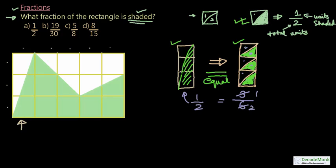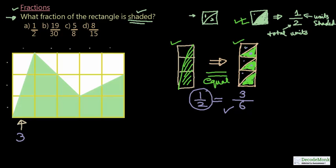So three by six portions are shaded for the first column. This simplifies to 1 by 2, but we will keep it as 3 by 6 for now, because we need to find the fraction of the whole rectangle. Total units: 6, shaded units: 3 for this first column.